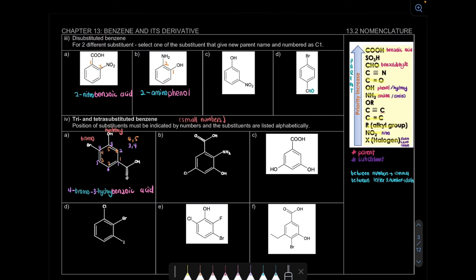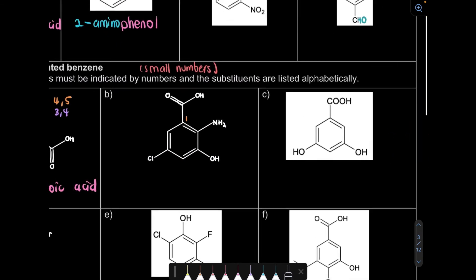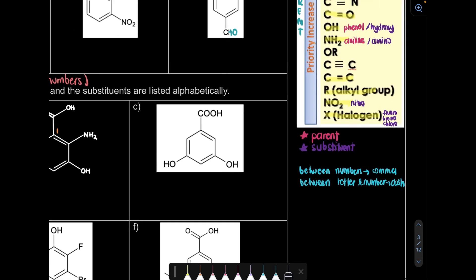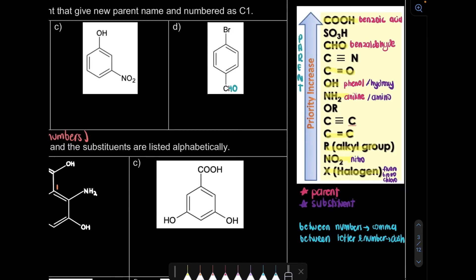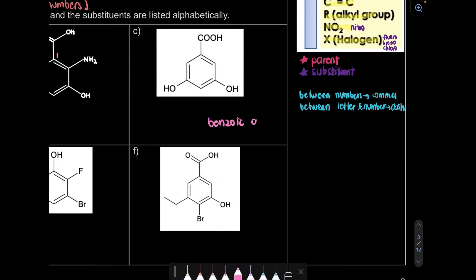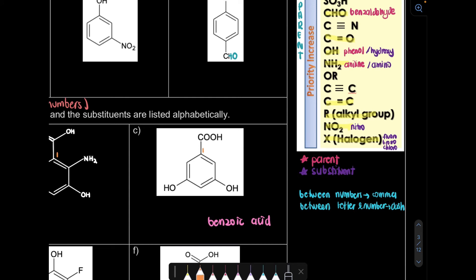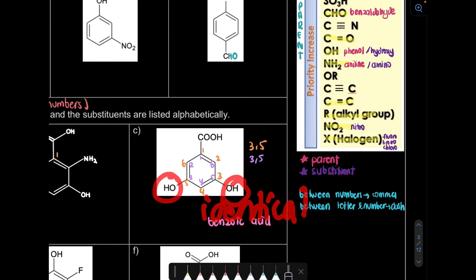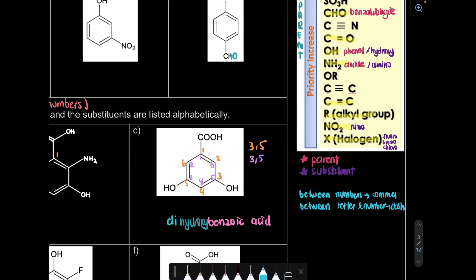For question B, which has 4 substituents — the parent is still benzoic acid at carbon 1. You should try that yourself. For question C, we have 3 substituents — carboxylic acid is the parent (highest priority), so the name is benzoic acid. The substituents are at positions 3 and 5 regardless of which direction you number. Since the two substituents are identical (both OH), we write dihydroxy, so the name is 3,5-dihydroxybenzoic acid.